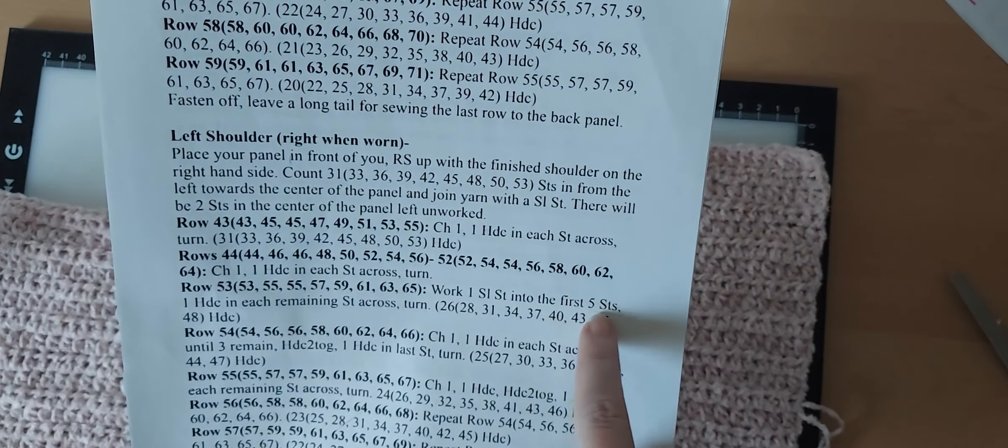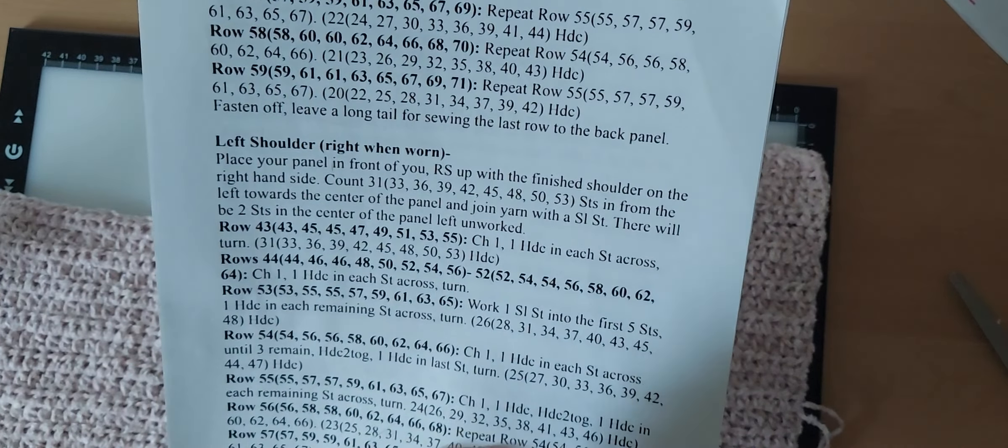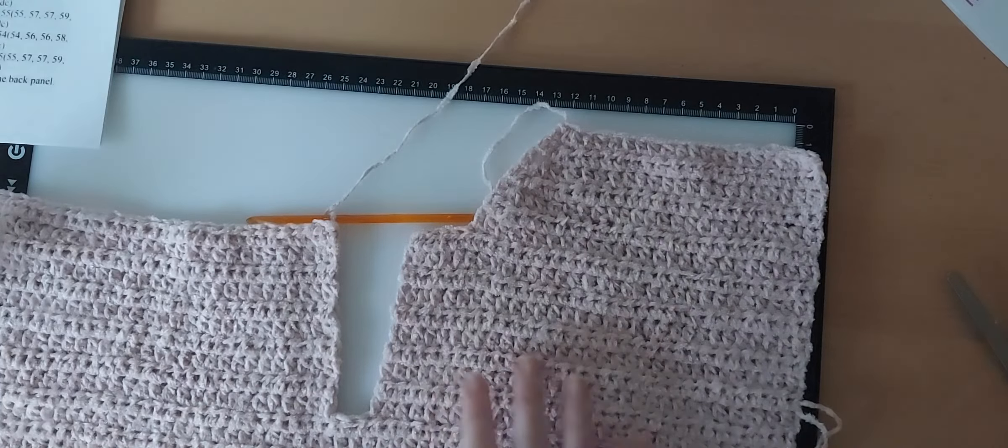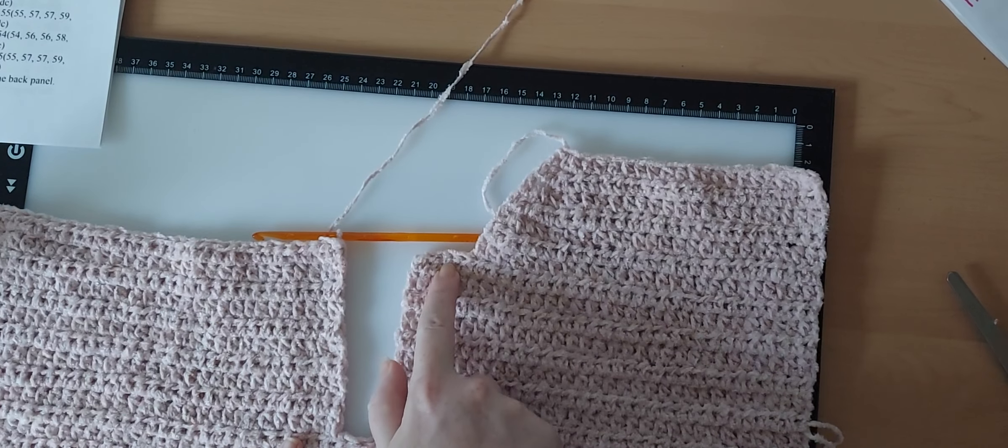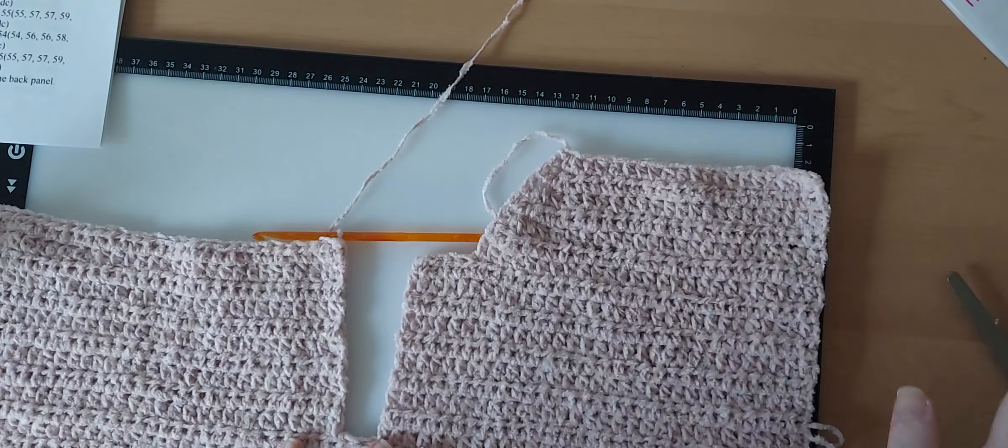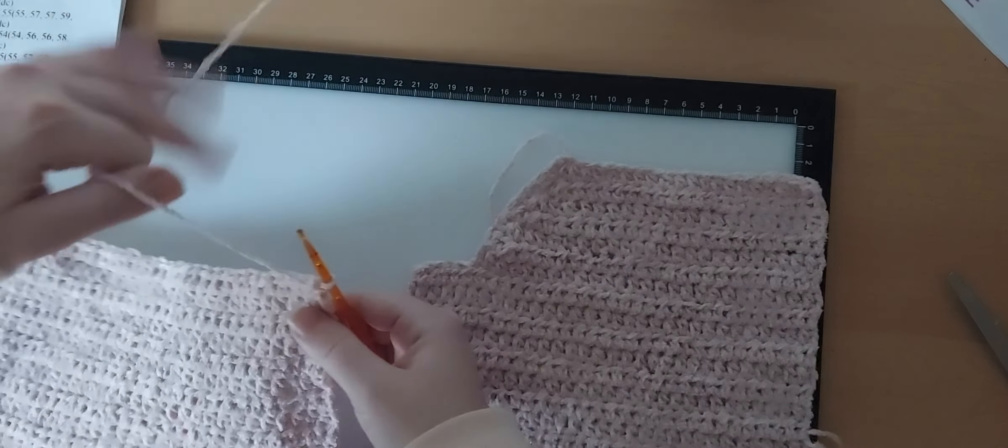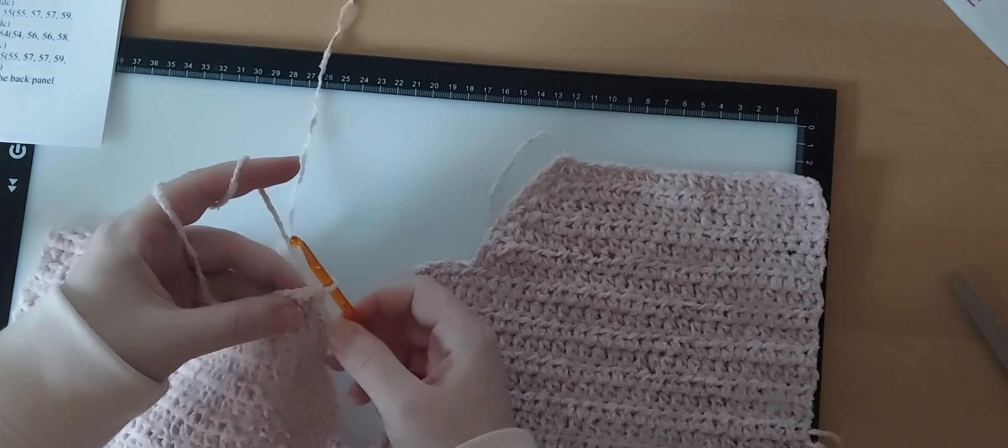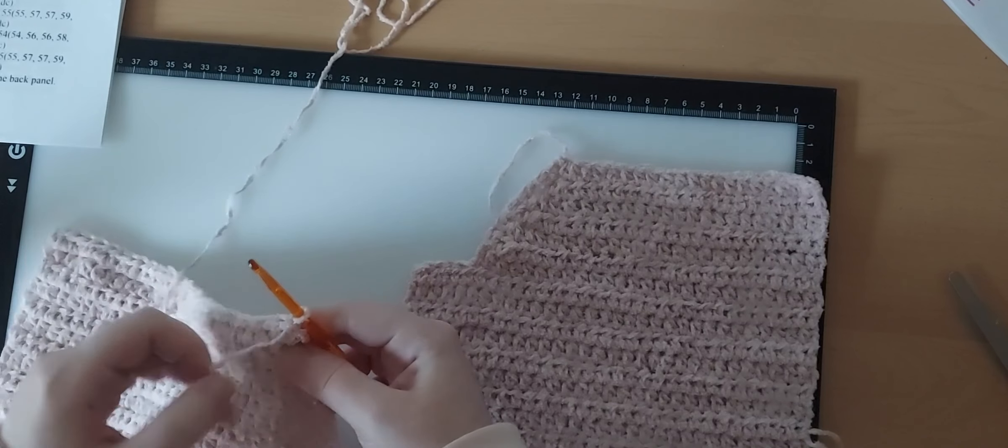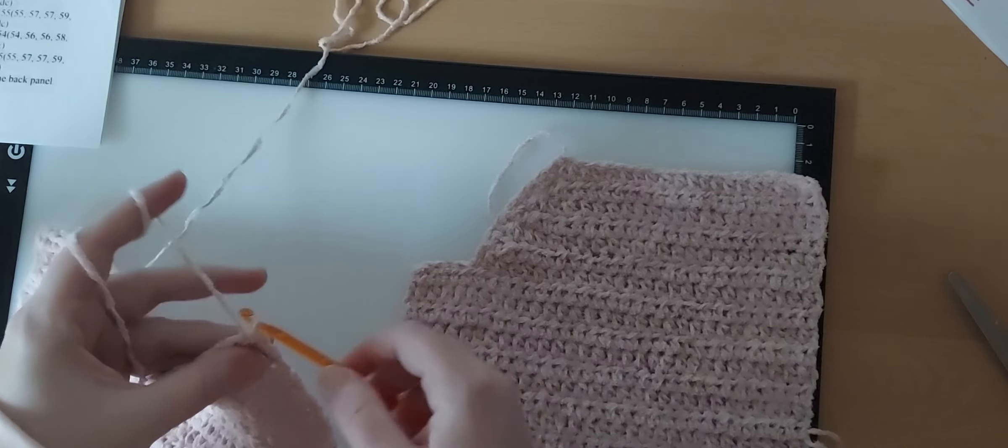The only thing we're going to do differently for this side is that we're going to work 1 slip stitch into the first 5 stitches and then half double crochet in each stitch across for this row. The reason we're doing that is because we need it to match right here. We didn't do slip stitches on this side because we were working from a different way, but in order to match this, we're going to need to slip stitch into the first 5 stitches.